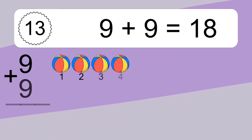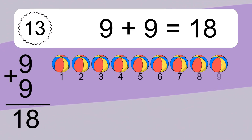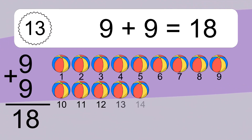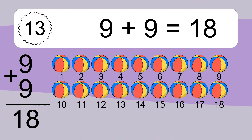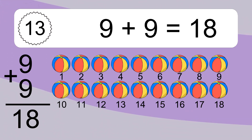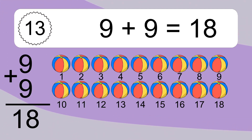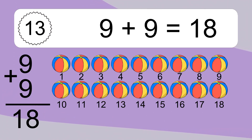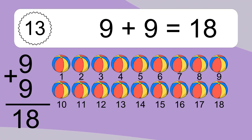9 plus 9 equals what? 9 plus 9 equals 18. 1, 2, 3, 4, 5, 6, 7, 8, 9, 10, 11, 12, 13, 14, 15, 16, 17, 18.